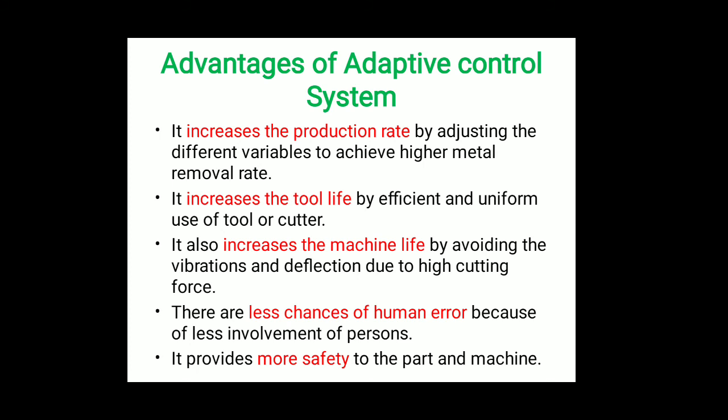Fifth, it provides more safety due to the automated machine. Sixth, it makes part programming easier. Seventh, it increases accuracy by making tolerance a constraint, so you get more accuracy in terms of tolerance. These are some advantages of the adaptive control system.